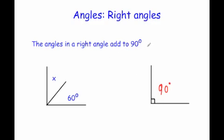For example, if I had two angles, X and 60 degrees, and this was a right angle, to find X I would take the angle they gave me away from 90. So I'm going to do 90 subtract 60. When I do that, 9 take away 6 is 3, so my answer would be 30 degrees. That means X is equal to 30 degrees.